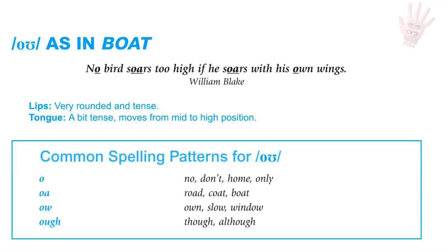O as in boat. For the O sound, the lips are very rounded and tense, and the tongue is a bit tense, moving from mid-high to high position. Common spelling patterns: the letter O as in no, don't, home; OA as in road, coat, boat; OW as in own, slow, window; and OUGH as in though and although.